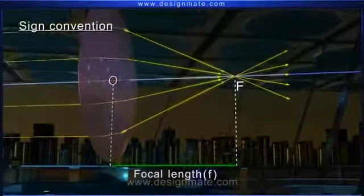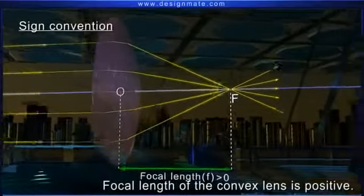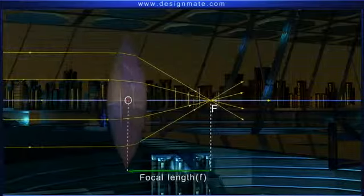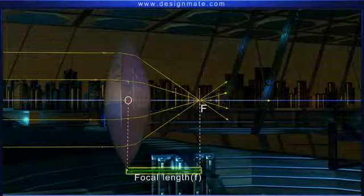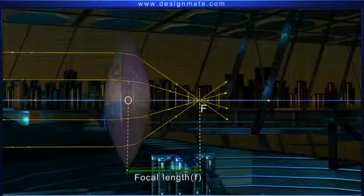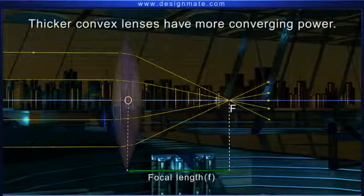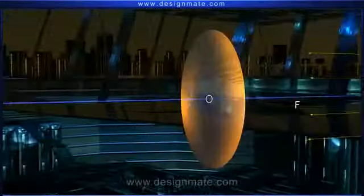According to the sign convention, the focal length of the convex lens is positive. Thicker lenses having greater curvature bend the light more and thus have shorter focal length. Hence, thicker convex lenses have more converging power.